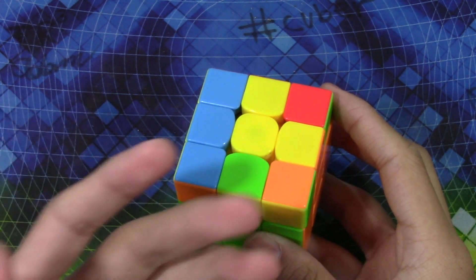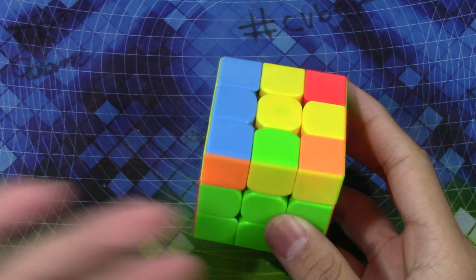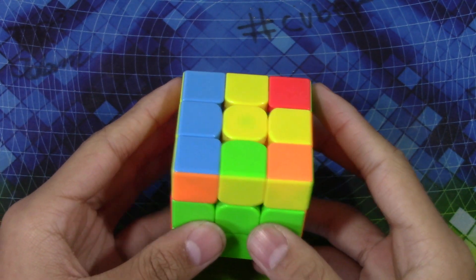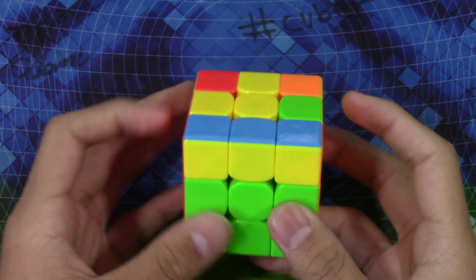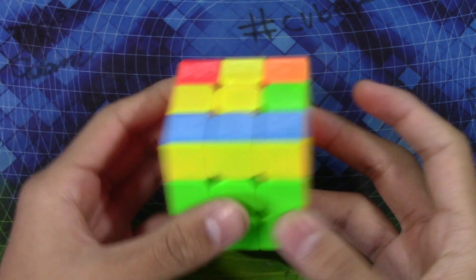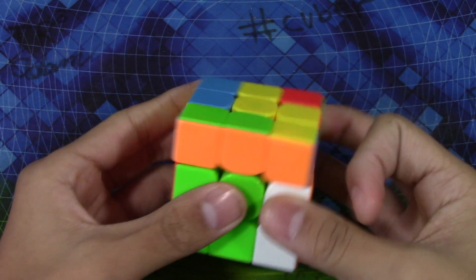For the case I showed previously these two colors were opposite, but now they're just adjacent colors, so that's how you recognize it. What you want to do instead of a U like the other one, you'd want to do a U prime and the alg is also really simple, it's just anti-sune.